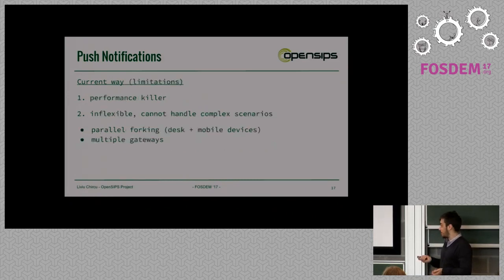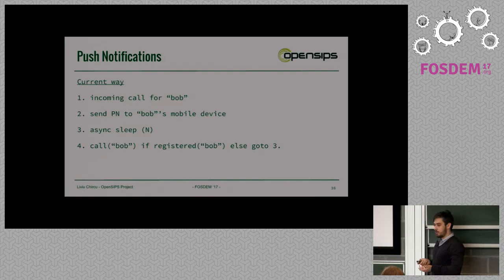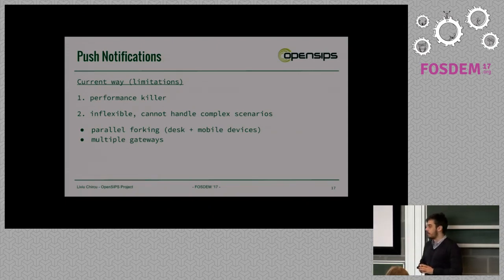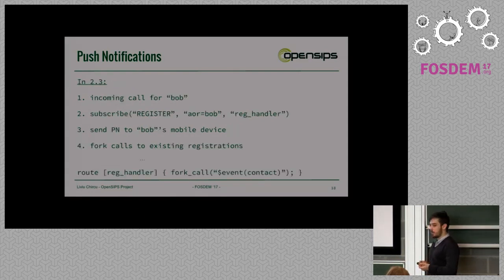What are the problems with this approach? First of all, it's a performance killer — it's a trade-off between user responsiveness and how much we want to spend in terms of CPU. Also it's inflexible — it cannot handle scenarios where we'd want to successively ring multiple mobile devices of that user. We can only do it once. The same idea applies to failover to multiple gateways — we're only able to do it once.